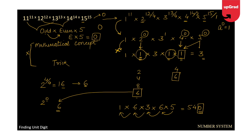However, the trick is still important. Suppose in the same question instead of multiplication we use addition: 11^11 + 12^12 + 13^13 + 14^14 + 15^15. Then you can't use the odd/even shortcut. You must compute: 1 + 6 + 3 + 6 + 5 = 21, so the unit digit of the answer becomes 1. Therefore the trick remains essential.